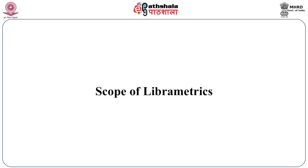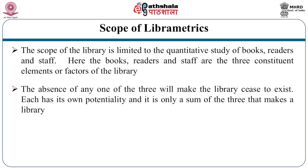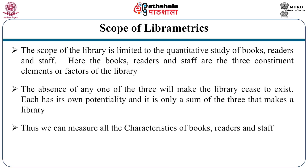The scope of Librometrics is limited to the quantitative studies of books, readers and staff. Books, readers and staff are the three constituent elements or factors of the library. The absence of any one of the three will make the library cease to exist. Each has its own potentiality and it is only the sum of three that makes a library. Thus, we can measure all the characteristics of books, readers and staff.